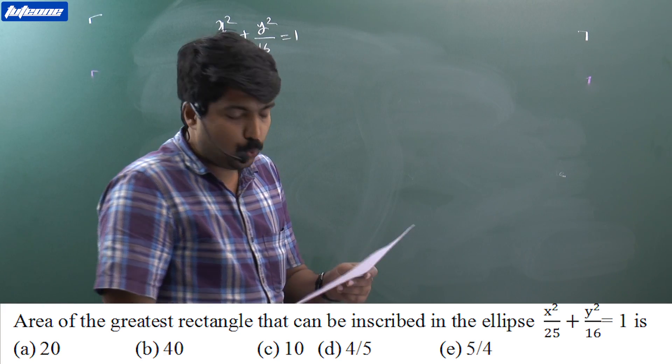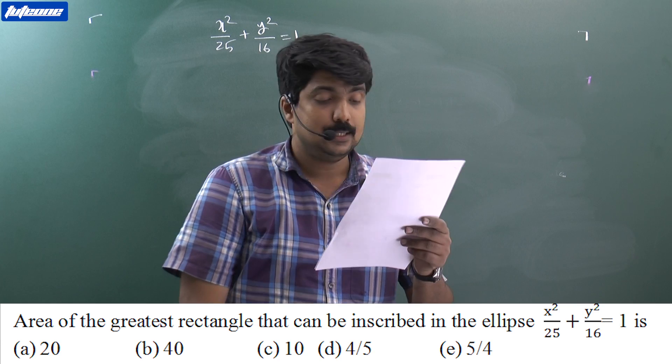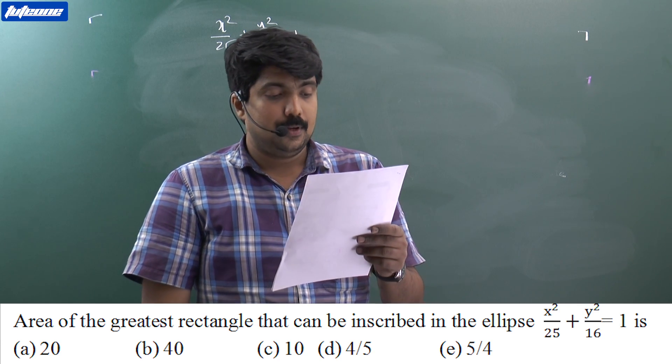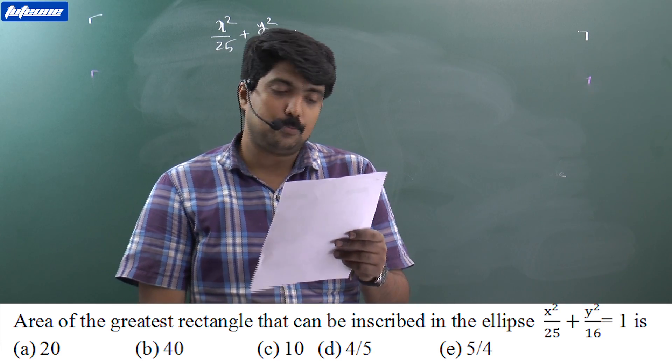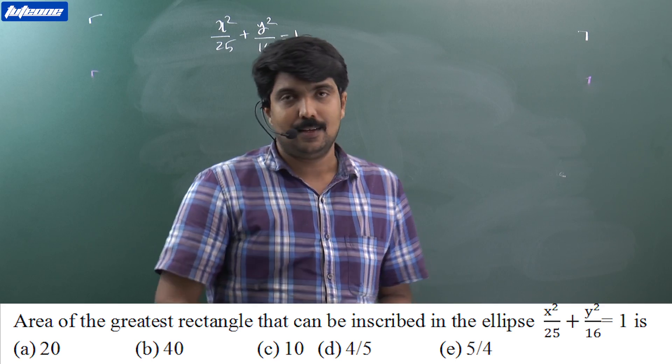Option A: 20, option B: 40, option C: 10, option D: 4/5, and option E: 5/4. So listen.